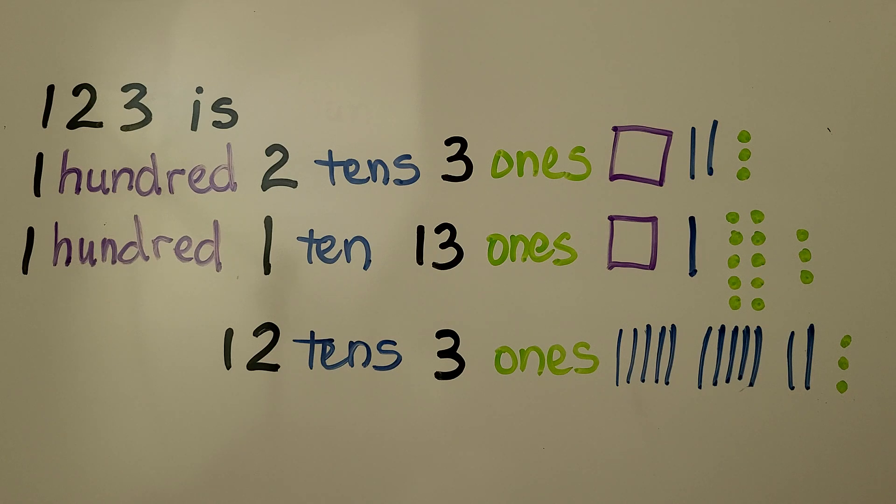And 123 is also twelve tens, three ones. We can turn the square of 100 into ten tens, and we add the two tens to it, and we get twelve tens, three ones.